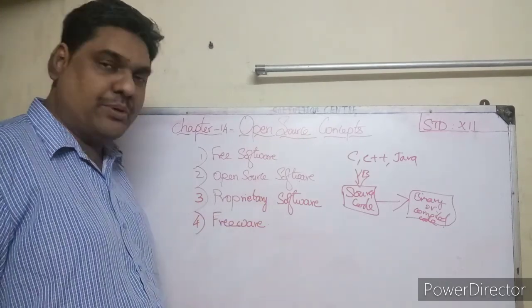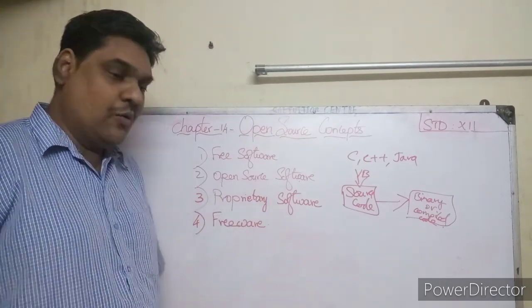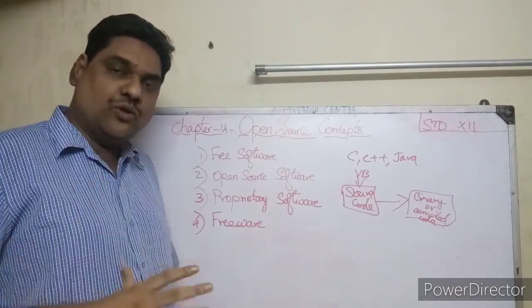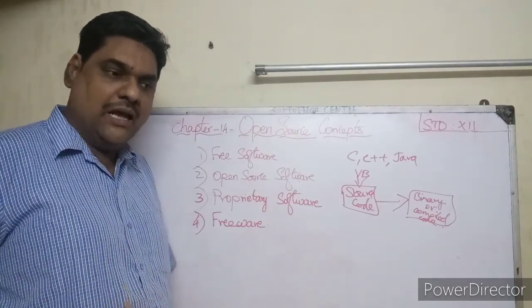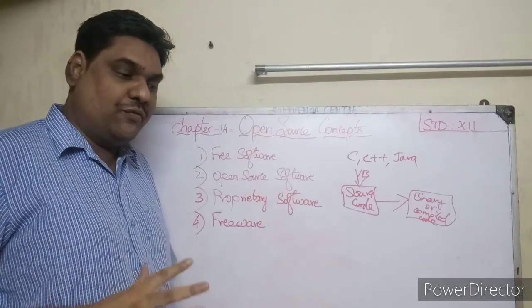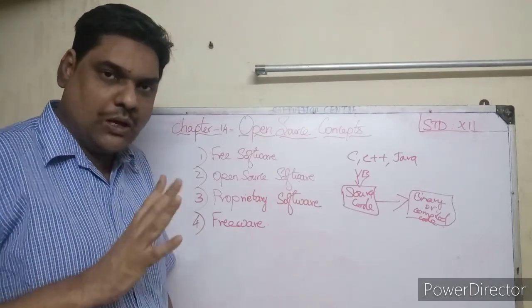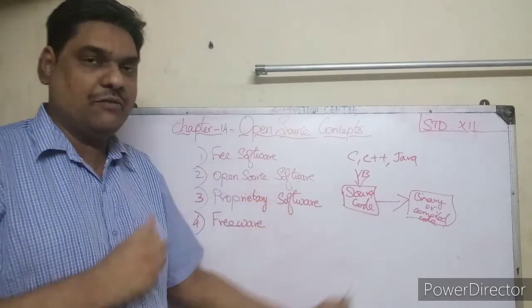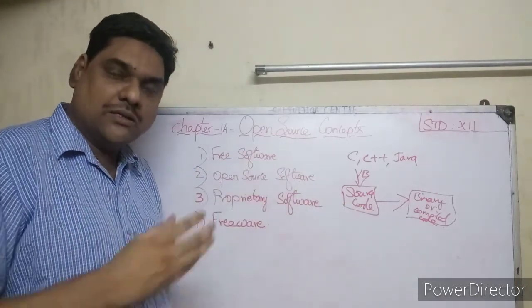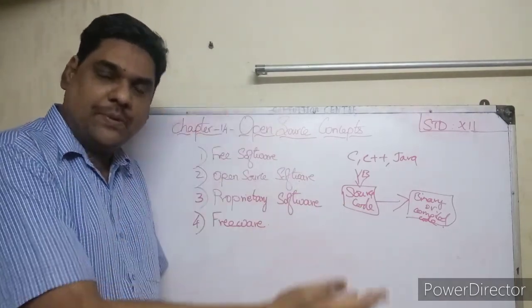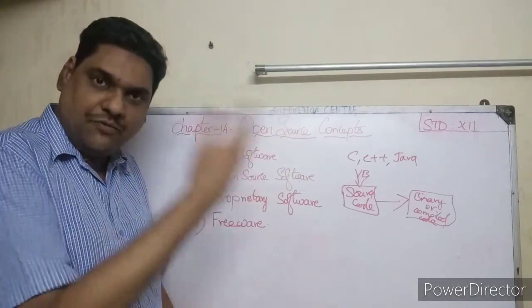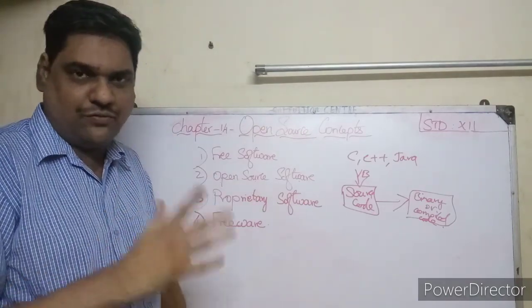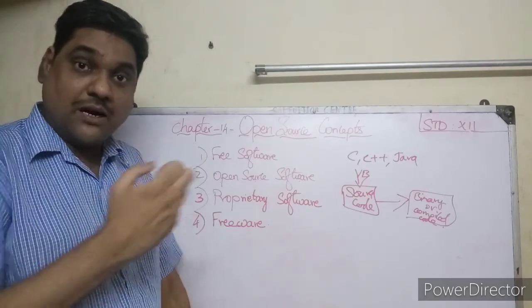Next is proprietary software. In proprietary software, a company creates the software and keeps the source code hidden. They only distribute the binary converted version — they do not share the source code. That kind of software is called proprietary software.